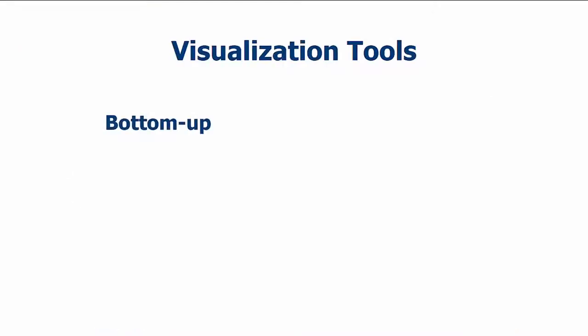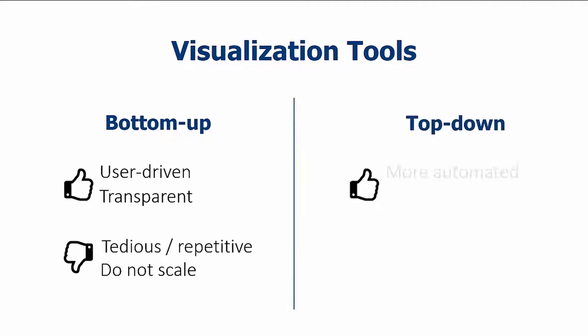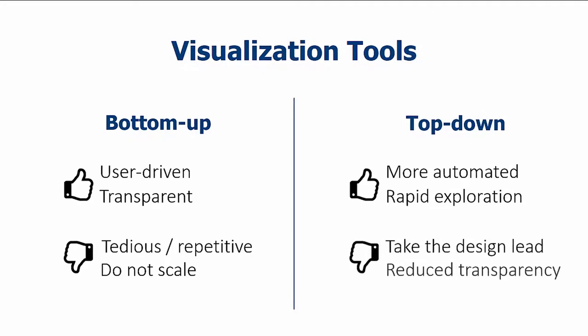Bottom-up visualization tools promote a user-driven, transparent design process but can be tedious to use and do not scale to larger datasets. Top-down tools are more automated and allow the rapid exploration of alternatives, but they can take the design lead and reduce the transparency of the process.